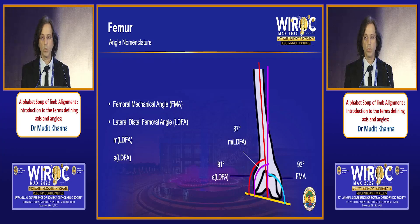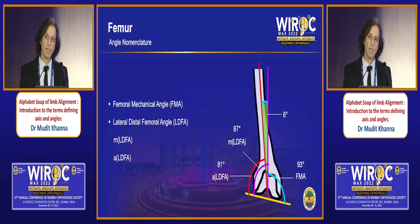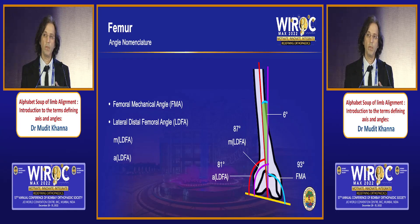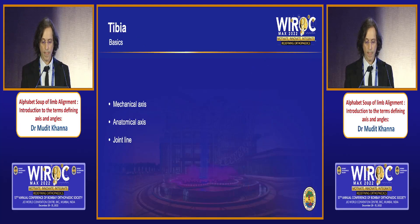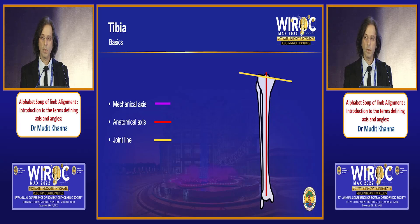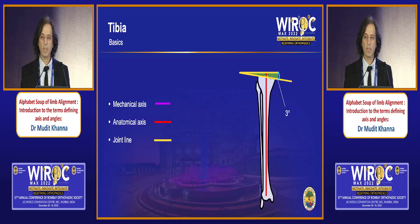If you draw a line at 180 degrees, the medial side measures on average 93 degrees ± 1.5 degrees, while the LDFA measured on the lateral side is 87 degrees. Some studies use the anatomical LDFA, which is 81 degrees on average — because the difference between the anatomical and mechanical axis is six degrees. So two angles to remember for the distal femur: the FMA and LDFA. For the tibia, the mechanical and anatomical axes are typically the same, and the joint line makes an angle of three degrees of varus.